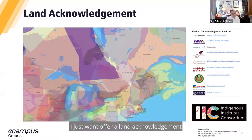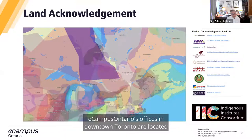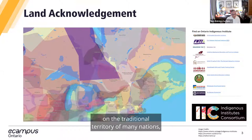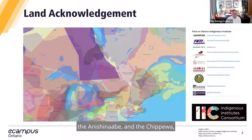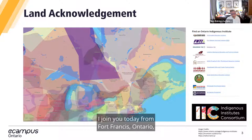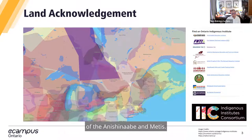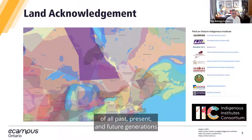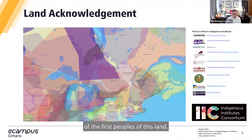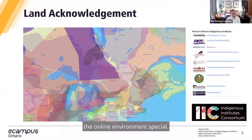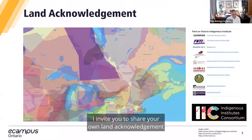I want to offer a land acknowledgement as we begin our session. eCampus Ontario's offices in downtown Toronto are located on the traditional territory of many nations, including the Mississaugas of the Credit, the Anishinaabe, the Chippewa, the Haudenosaunee, and the Wendat peoples, and is now home to many diverse First Nations, Inuit, and Métis. I join you today from Fort Francis, Ontario, which is situated in the traditional territory of the Anishinaabe and Métis. I recognize and am grateful for the legacy of all past, present and future generations of the First Peoples of this land. In this virtual space, we are all convening from different places. I invite you to share your own land acknowledgement in our chat.